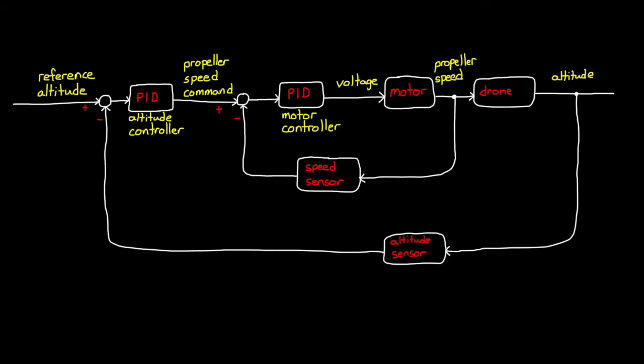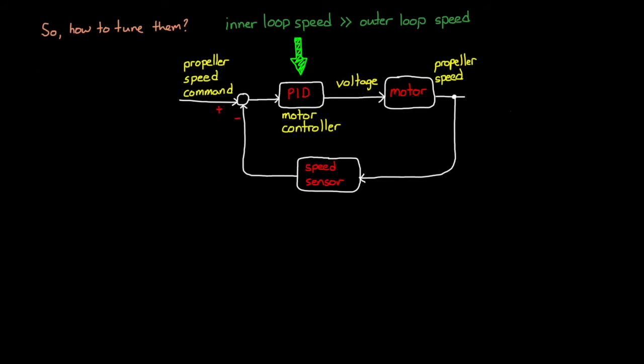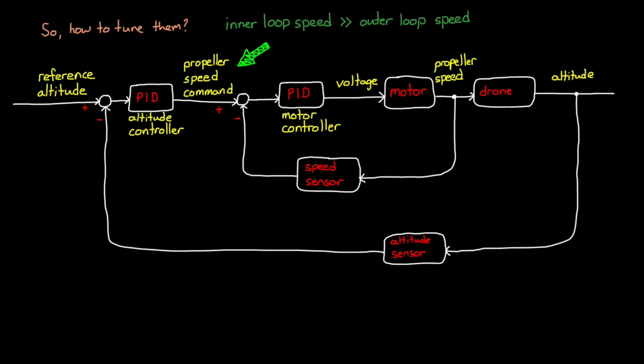Okay, now that we have an understanding of why we need cascaded loops, let's quickly discuss a few ways to tune them. First off, if the inner loop is much faster than the outer loop, that is, the bandwidth of the loop is at least about five to seven times higher, then it is possible to tune them separately. For our drone example, we could tune the motor controller first and make sure that when we command a speed, the motor spins up quickly with the performance that we want. And then, since the inner loop is so fast, when the outer loop requests a motor speed, the motor spins to that speed quickly, so that to the outer loop, it might as well be instantaneous.